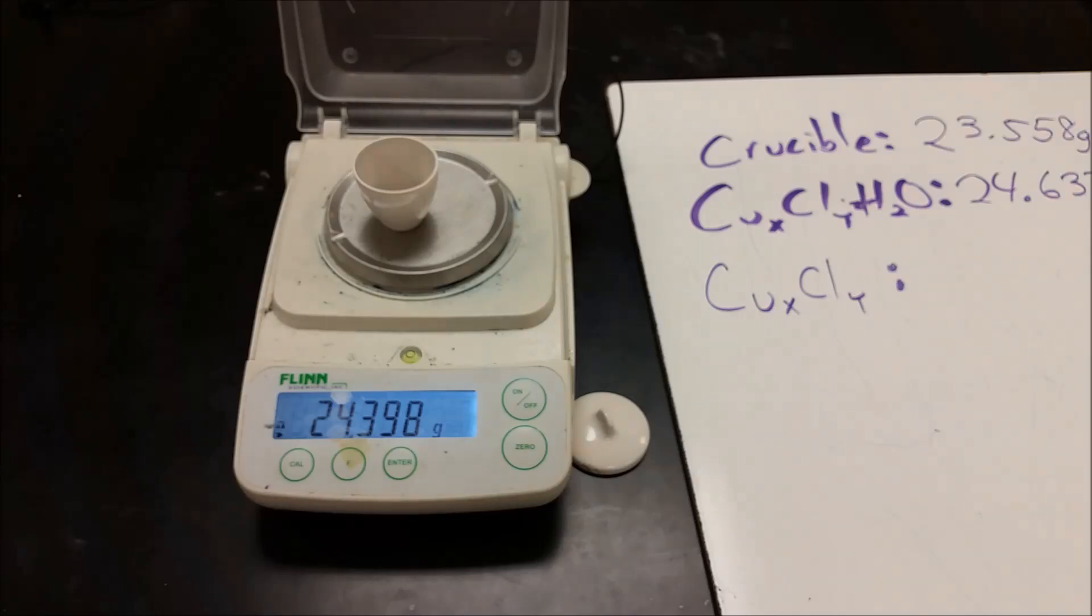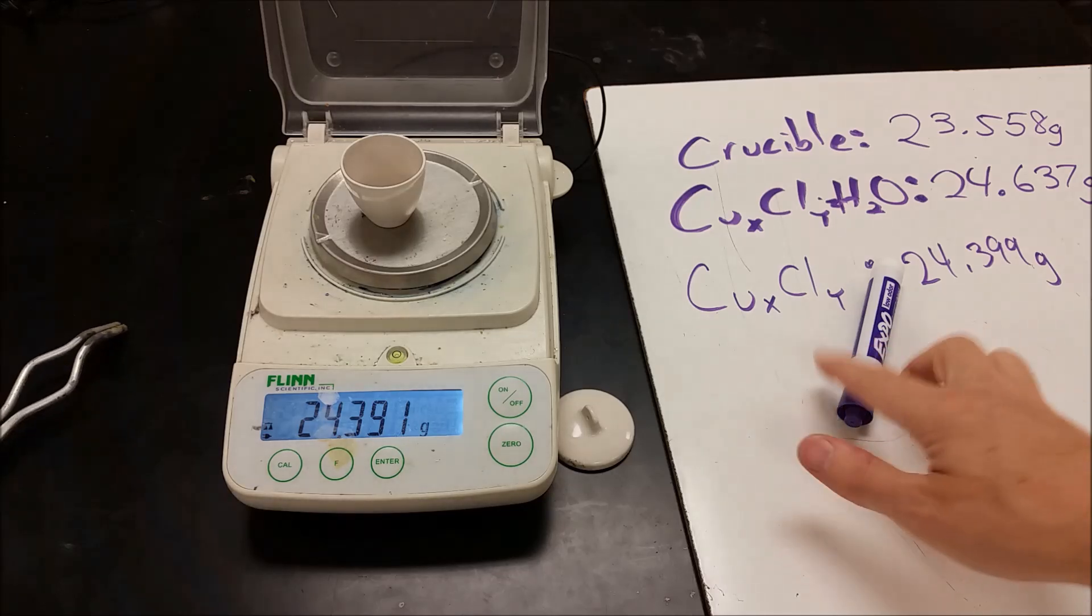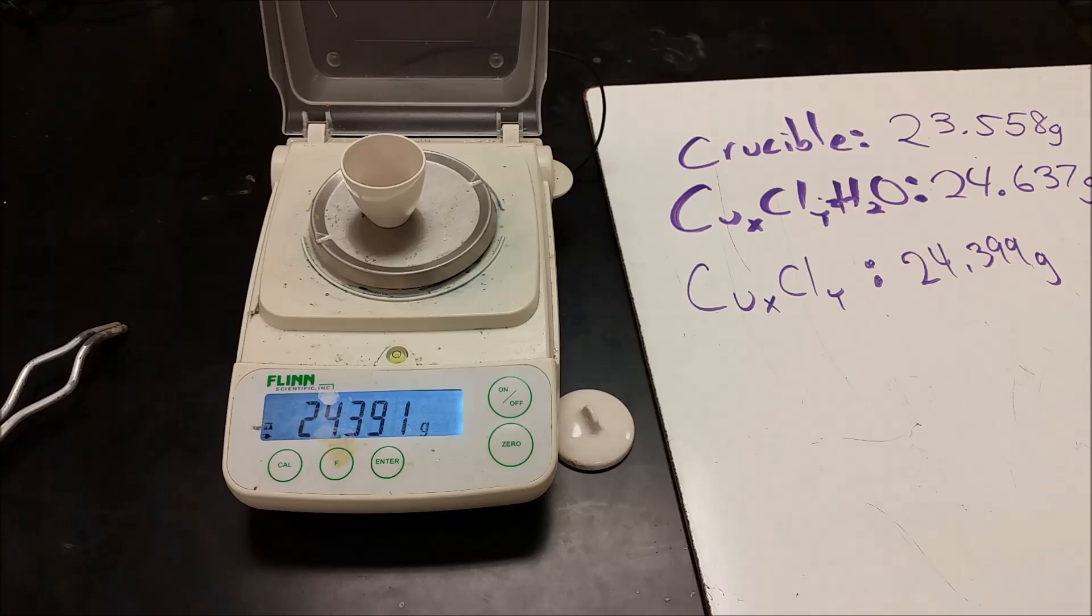So this is after our first heating. So we're going to go ahead and get that number down. Then we're going to go ahead and do it again. Make sure it's done. So we've done a little bit more heating. It's gone down very, very slightly. Keep in mind this is probably a little testing the accuracy of the thing. So we're going to go ahead and call that good there. Write that down as our final.